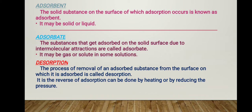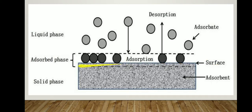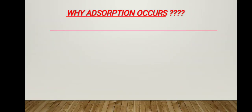Desorption is the reverse of adsorption and can be achieved by heating or by reducing the pressure. A diagram illustrates these terms: the molecules coming to and accumulating on the surface are the adsorbate; the surface providing material is the adsorbent in the solid phase; and the accumulated layer is the adsorbed phase, which may be liquid or gas, since both liquid and gaseous particles can be adsorbed.